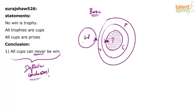Some cups can be wins — those outside cups which are not trophies can be wins. But all the cups cannot be wins because if all the cups become win, trophies will also become win, which is not allowed. So all cups can never be win is a true conclusion — the conclusion follows the given set of statements. This is a definite conclusion, so it must follow every diagram, and we have confirmed that it does.